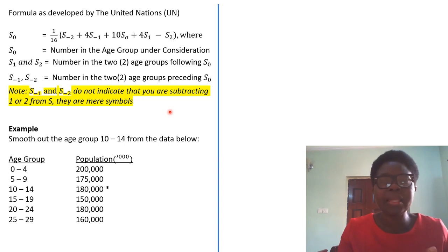Now this is an example. In this example, we are told smooth out the age group 10 to 14 from the data below. We have been given data from a particular census population. We have from zero to four down to 25 to 29. You have five years that make it up. If you look at zero, you have zero, one, two, three, four - five years.